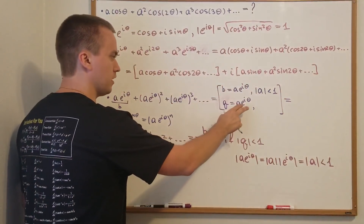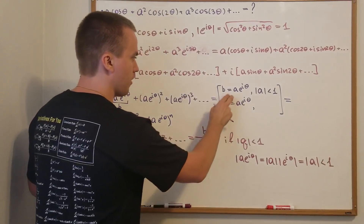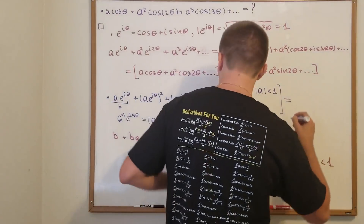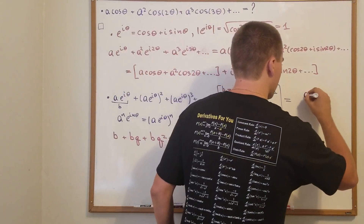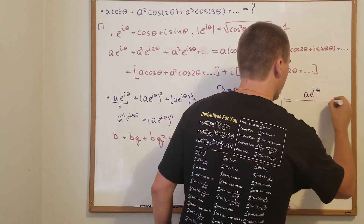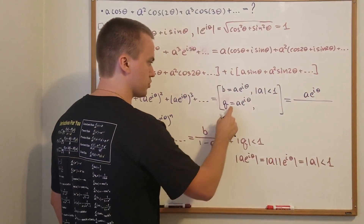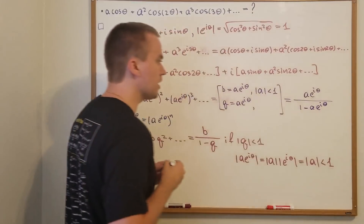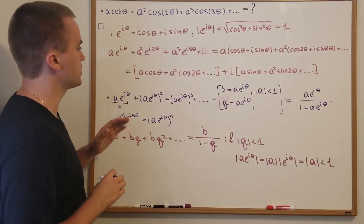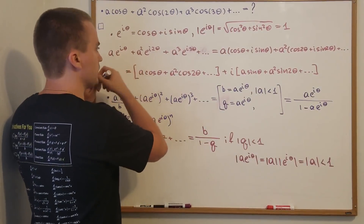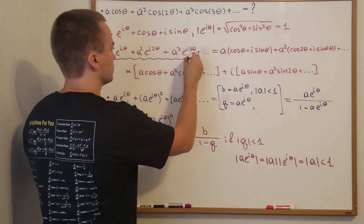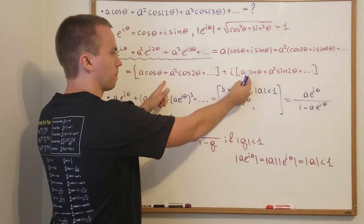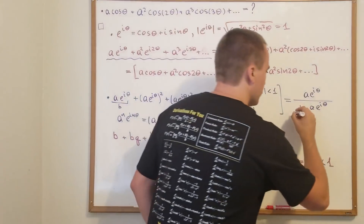We checked the condition and found B and Q for the geometric series. So the whole sum equals B over (1 − Q), which in our case is A·e^(iθ) over (1 − A·e^(iθ)), valid when |A| < 1. From one side, the series equals this sum, and from another side it equals this expression.